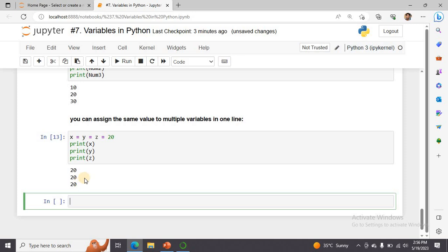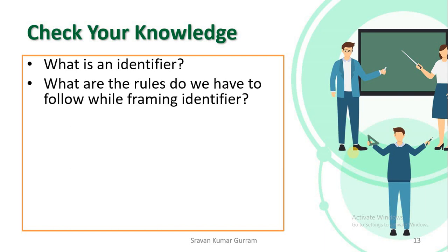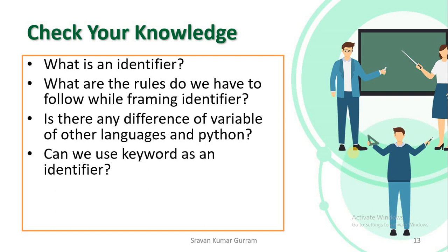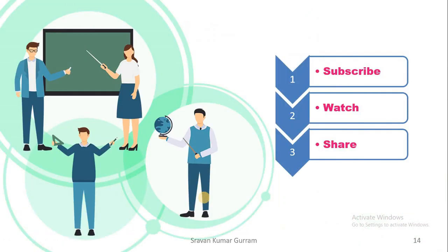Now check your knowledge from this video: What is an identifier? What are the rules for framing identifier names? Is there any difference between variables in other languages and variables in Python? Can we use a keyword as an identifier? How does Python handle memory efficiently? If you find this video useful, please subscribe to the channel, watch, and share the videos. Thank you.